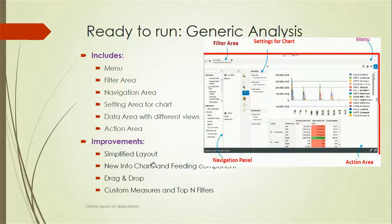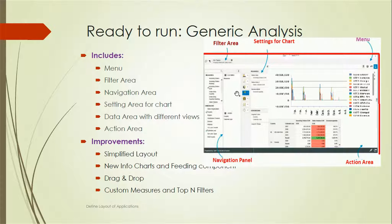It has very simplified layouts, new info charts, and a fitting component. Drag and drop, custom measures, and top-end filters are available. On the left side there are measures, then columns and rows — whatever columns, rows, or data sources we assign will appear there. On the right side you will see settings for charts, where we can change to different chart types.